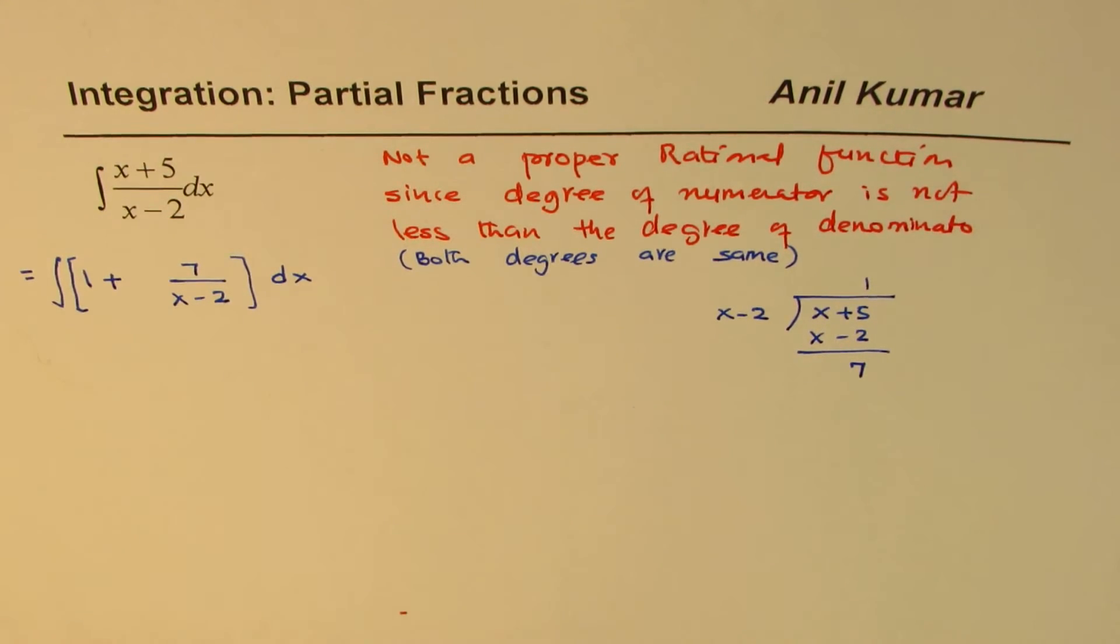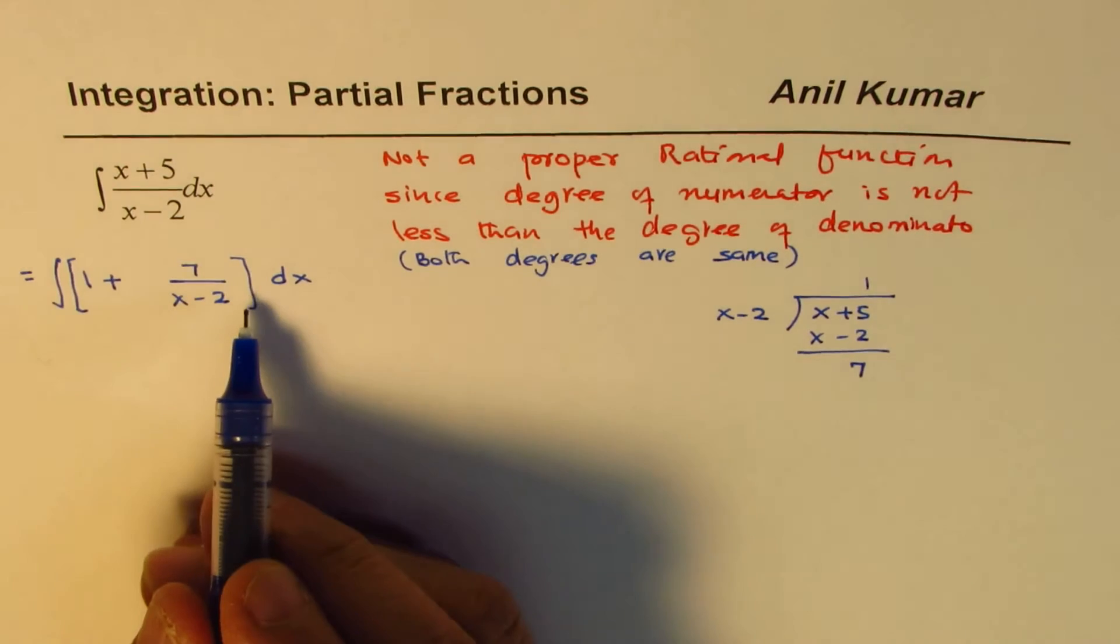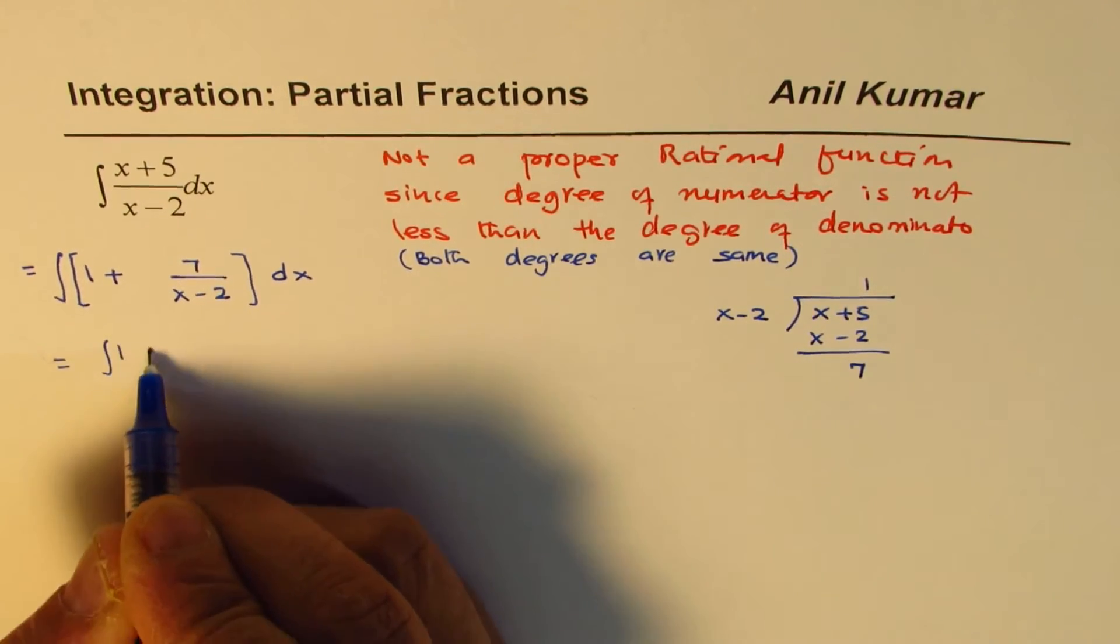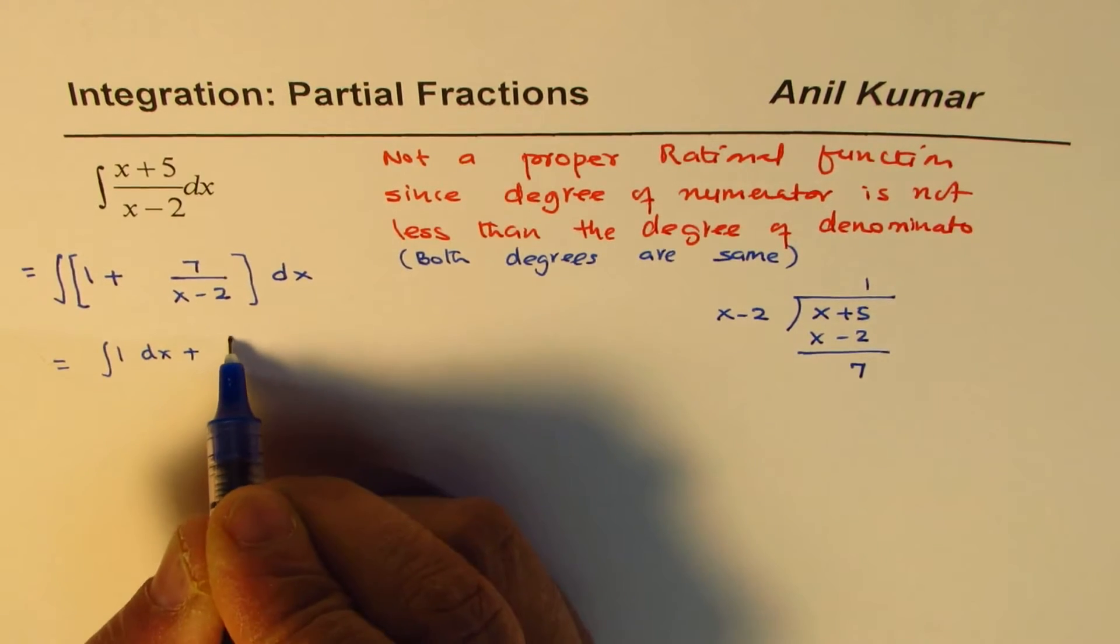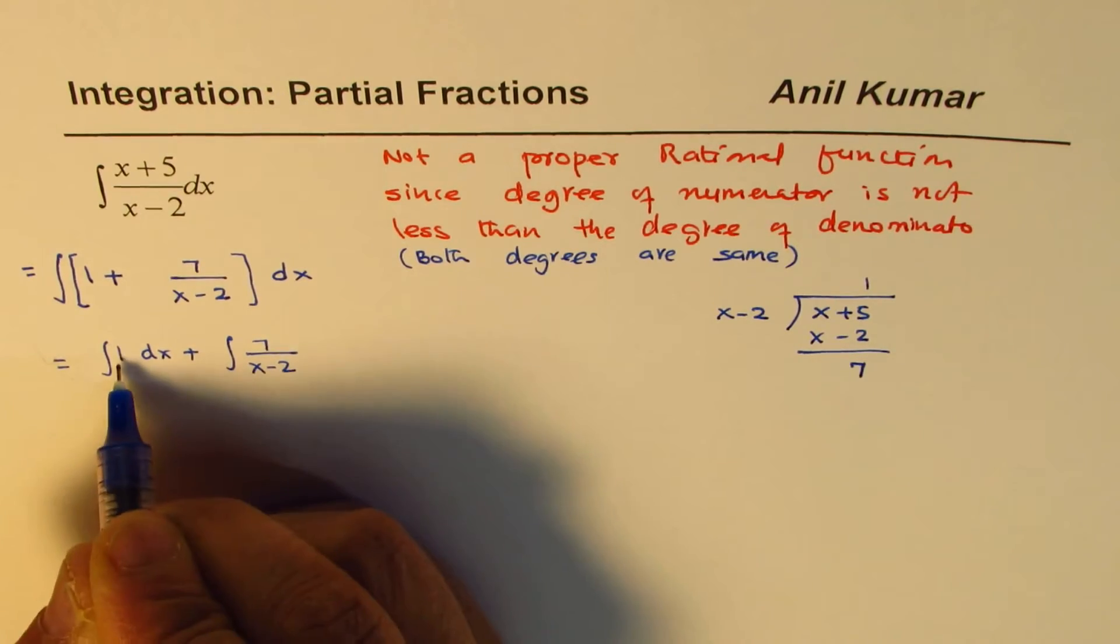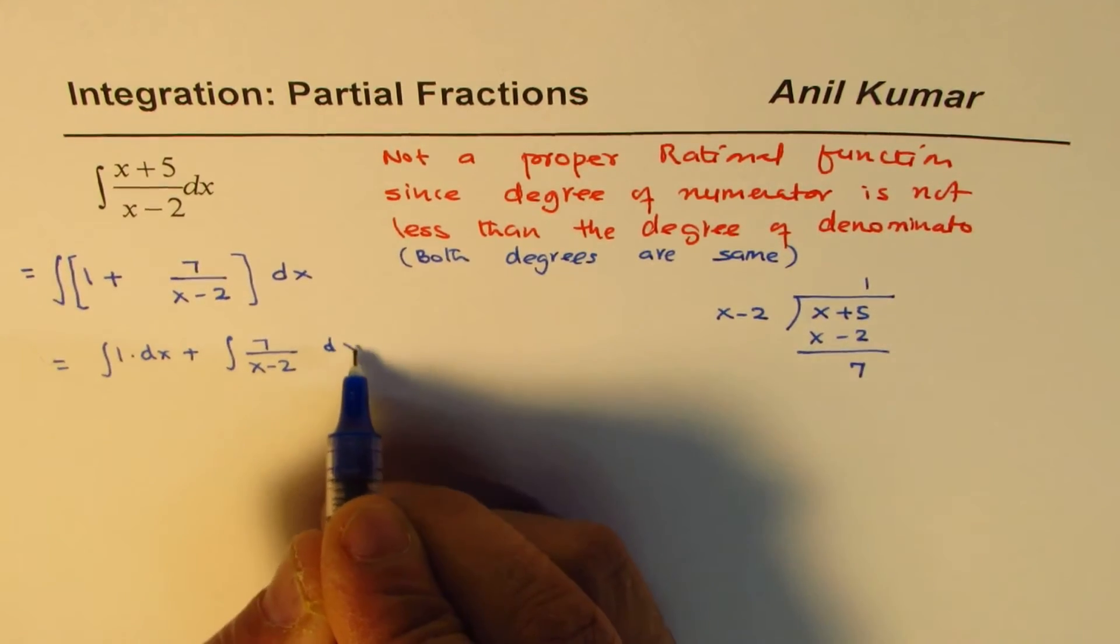So we need to integrate now. Now it is very simple. It could be integrated as integration of 1 dx plus integration of 7 over x minus 2. There was no need to write this 1, but anyway, okay.